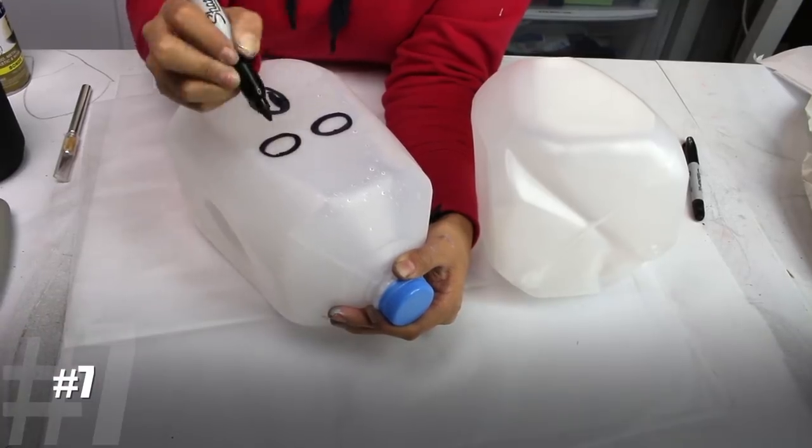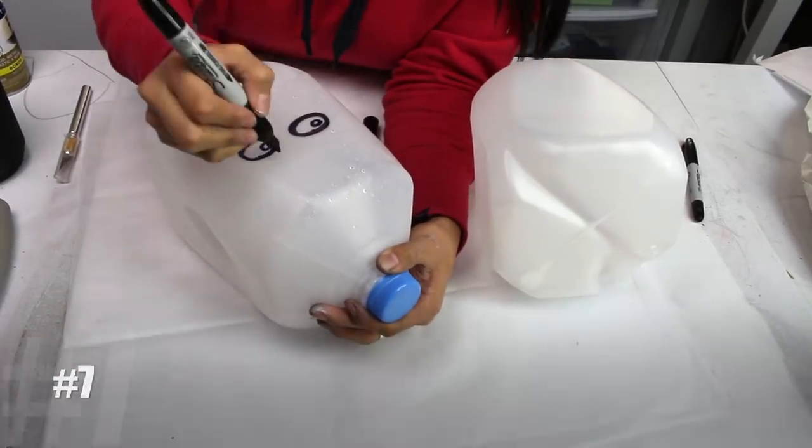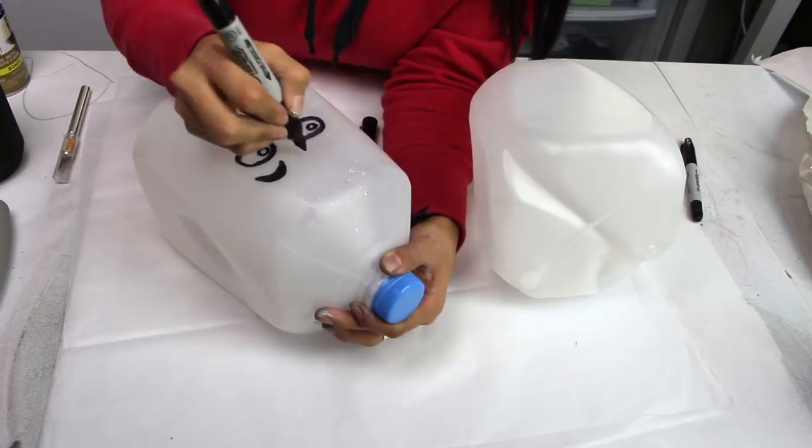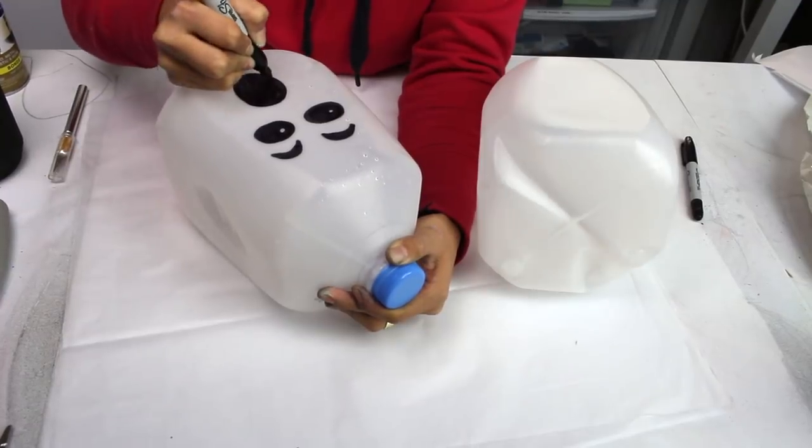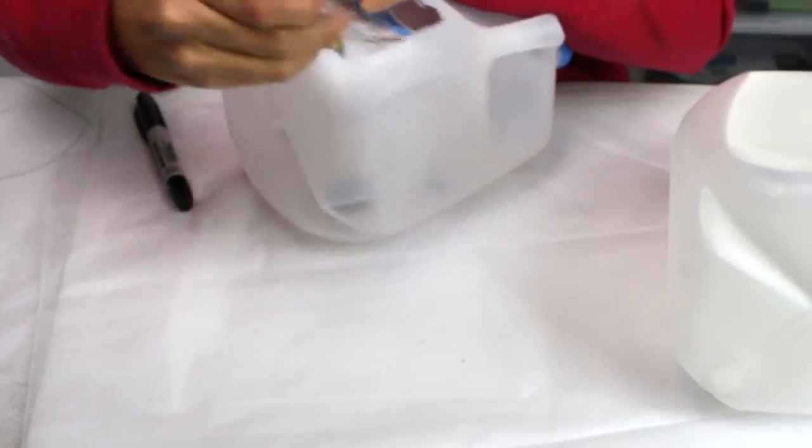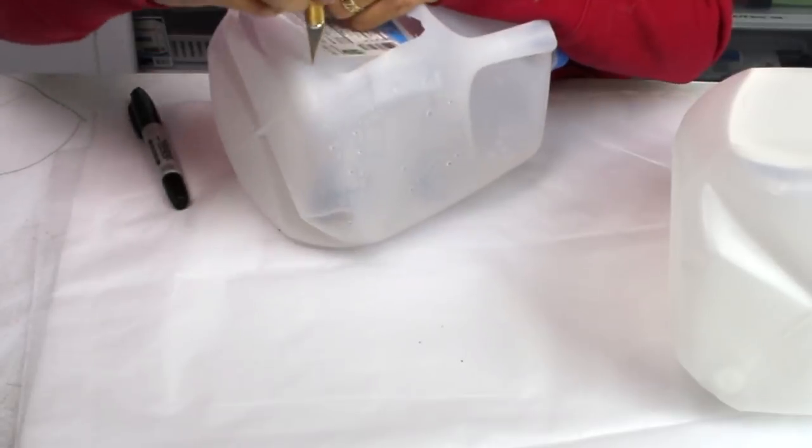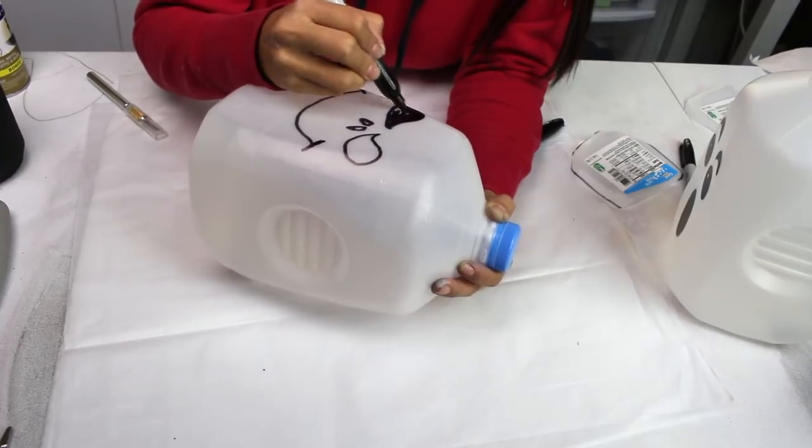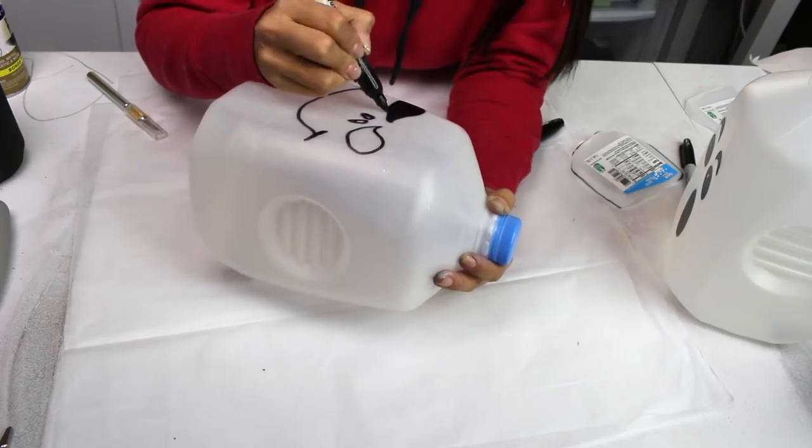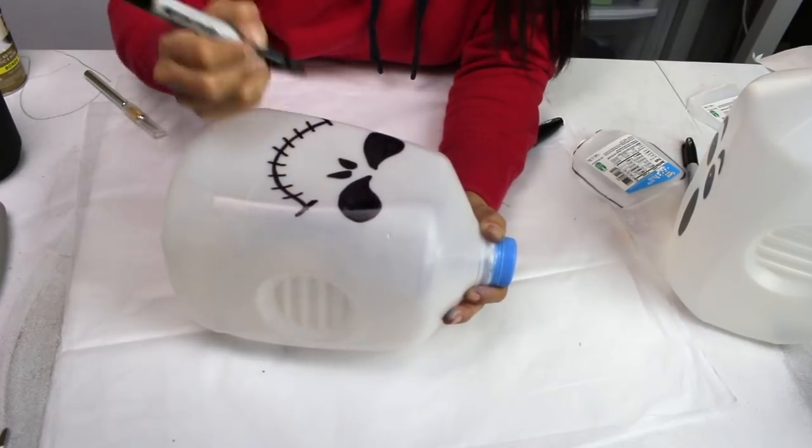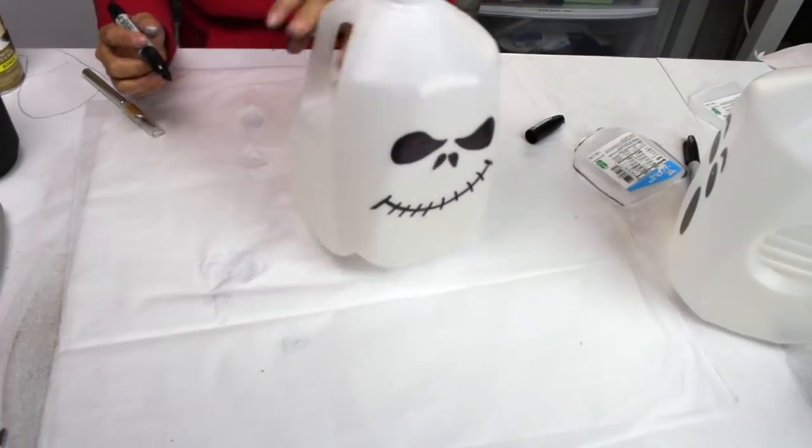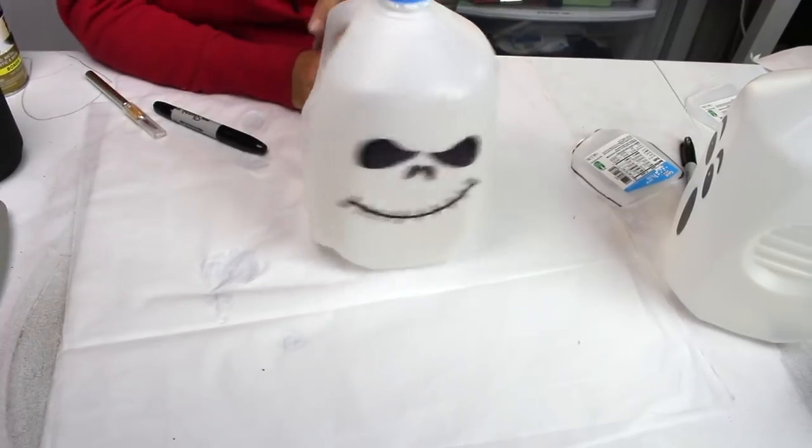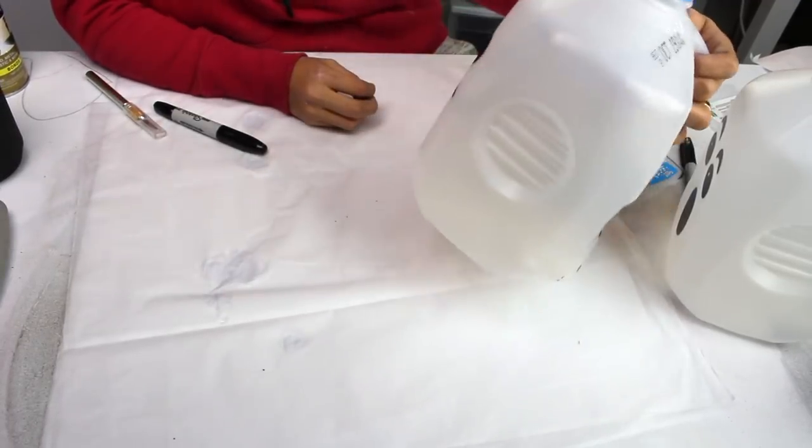For the next one, this is also very very easy. Some empty milk jugs, gallons of milk, you wash them, clean them, dry them. And with a sharpie, a permanent marker, you make little faces however you want, you can look on the internet. And you make a little square in the back part with a cutter, a knife, scissors, whatever you have on hand.